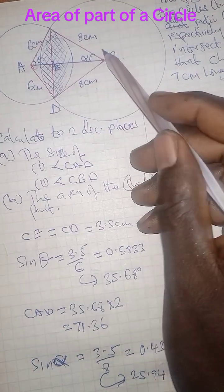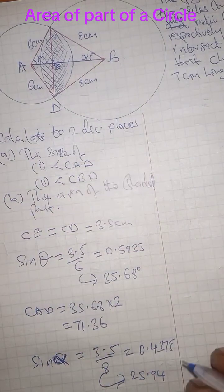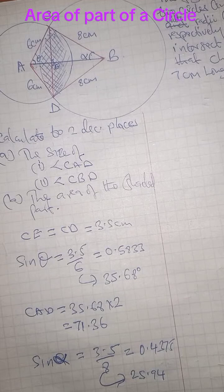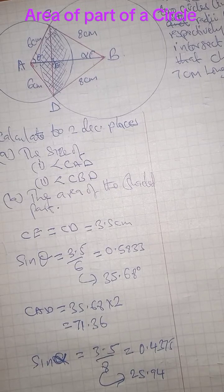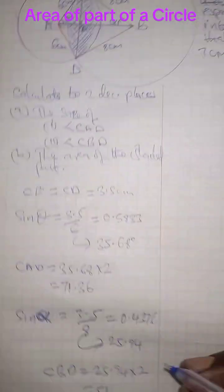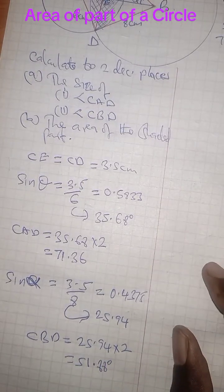This angle is equal to this one. So if this one is 25.94, the whole of this angle CBD will be equal to 25.94 multiplied by 2, giving us 51.88 to two decimal places.